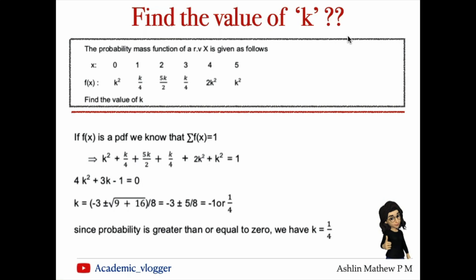We need to find the value of k. We are given a probability mass function of a random variable X where x equals 0, 1, 2, 3, 4, and 5. The corresponding f(x) values are k²,